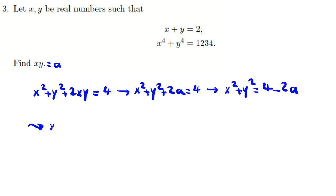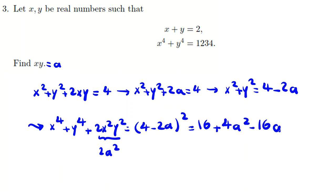If you raise both sides to the power of 2, x to the 4 plus y to the power 4 plus 2x squared y squared equals 4 minus 2a squared. So it is 2a squared. Now it will be 16 plus 4a squared minus 16a.